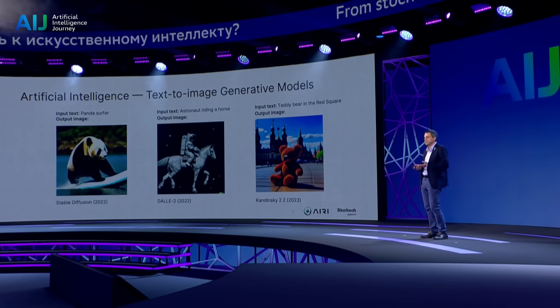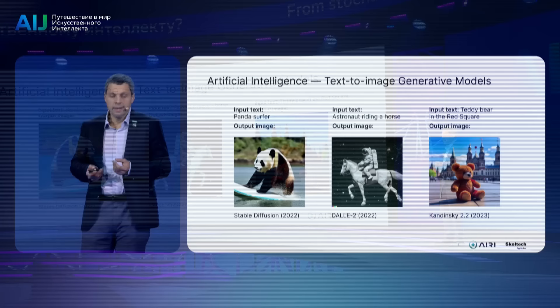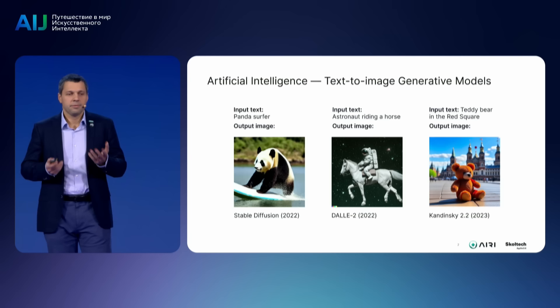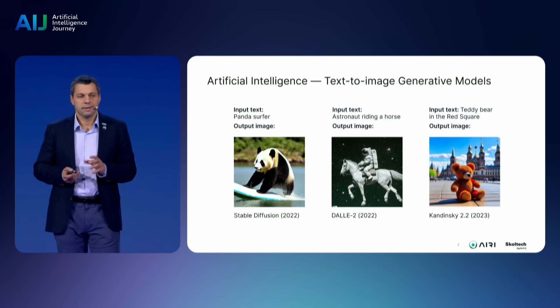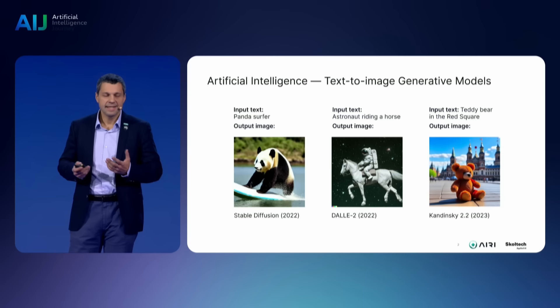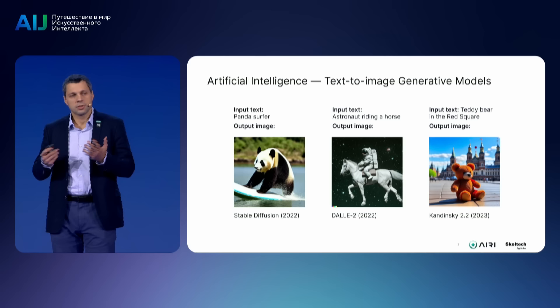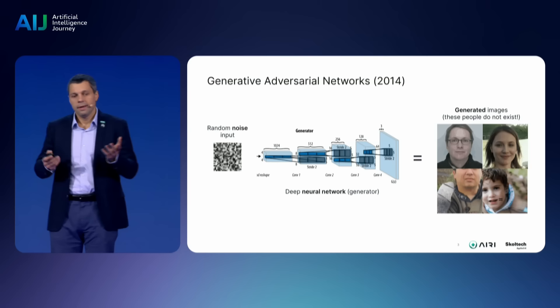An important property that AI should have, and that people do have, is creativity — the ability to create. These are images generated by an AI-based model conforming to a text prompt from a human. Mathematically, the problem of creating new images can be described as building a distribution model for different types of data: text, image, sound, and being able to model connections between these types of data.